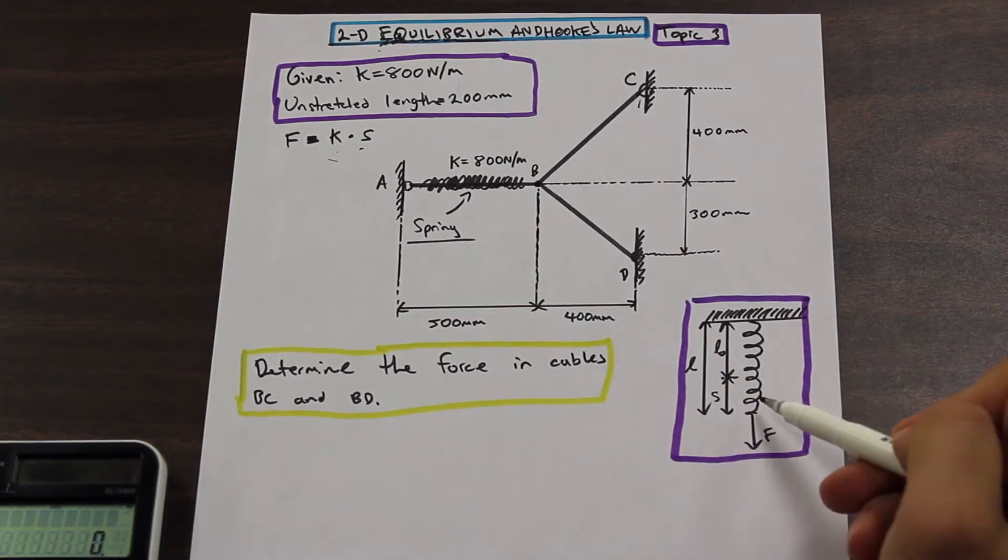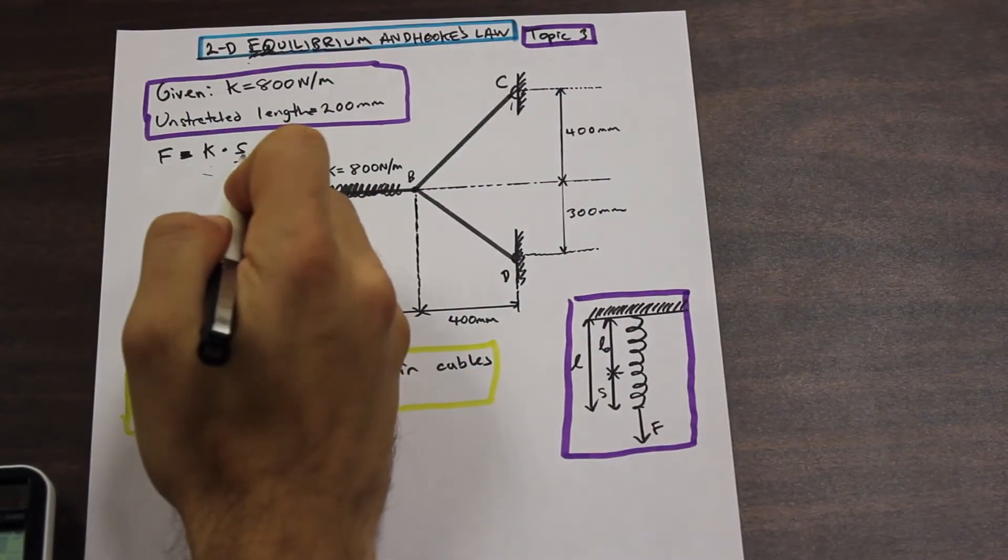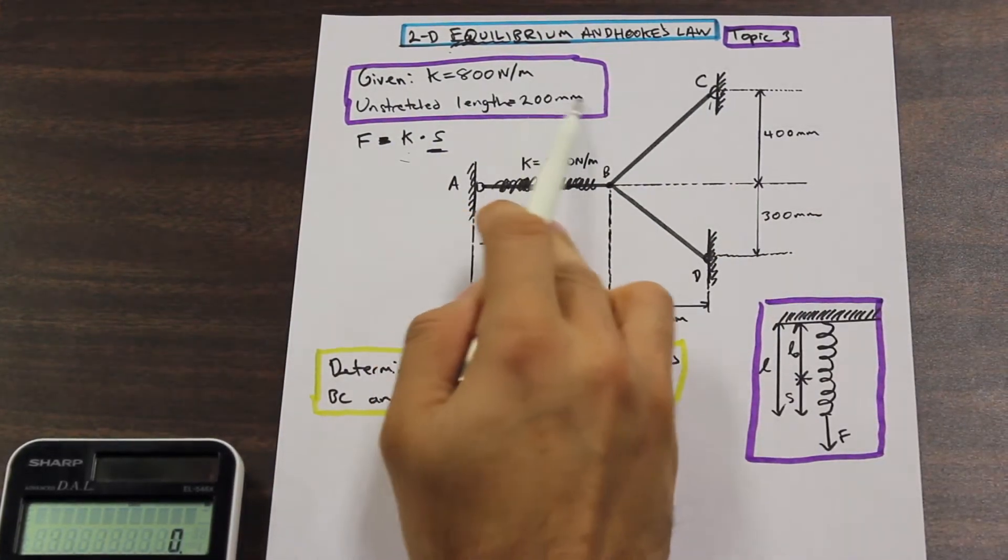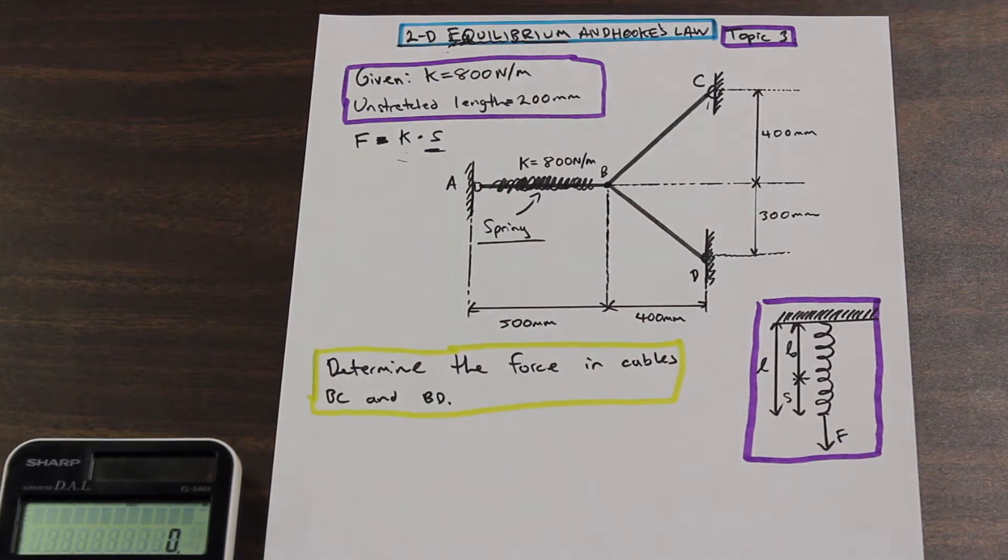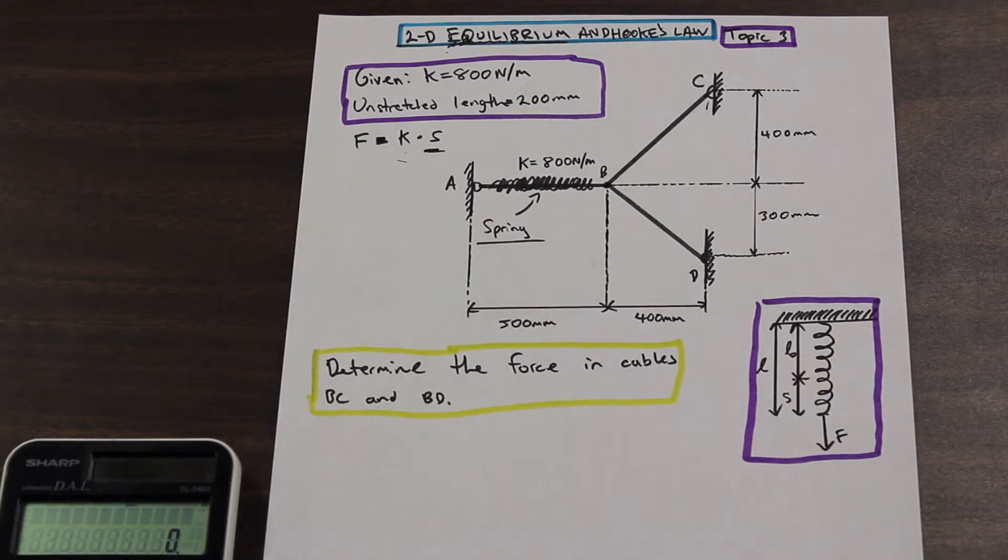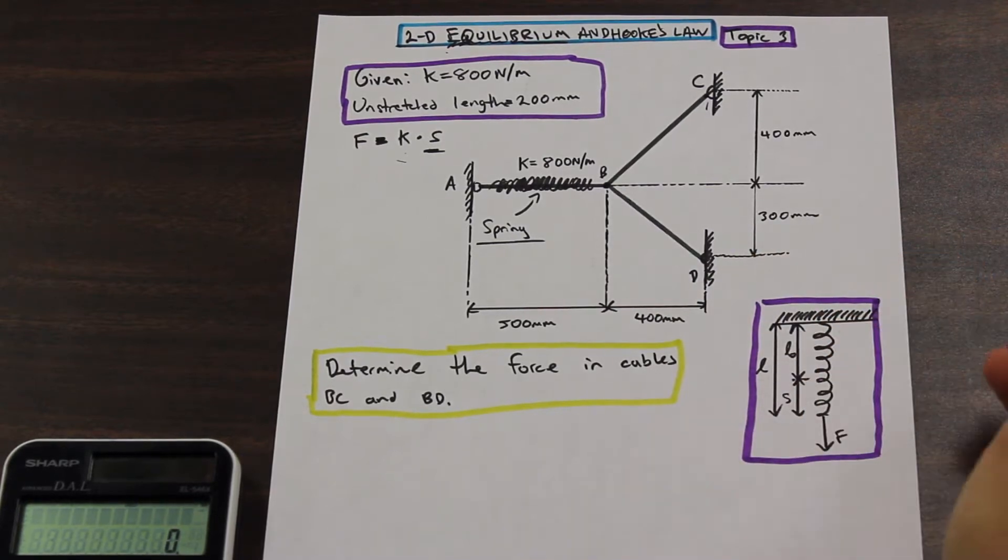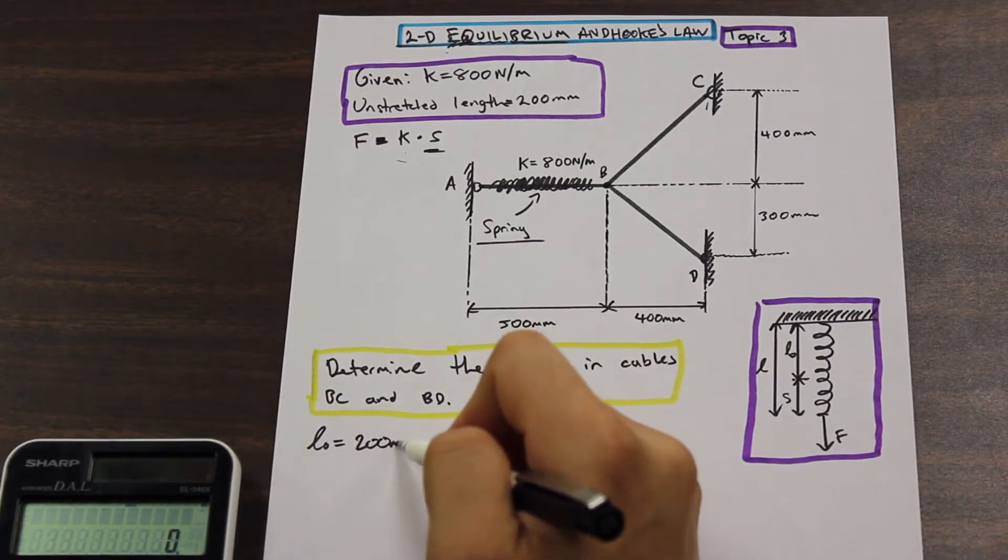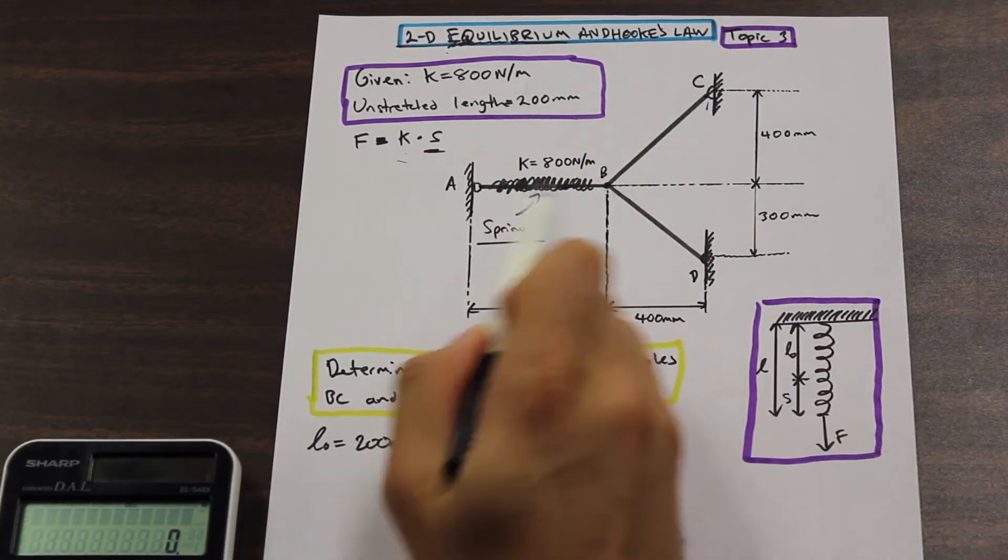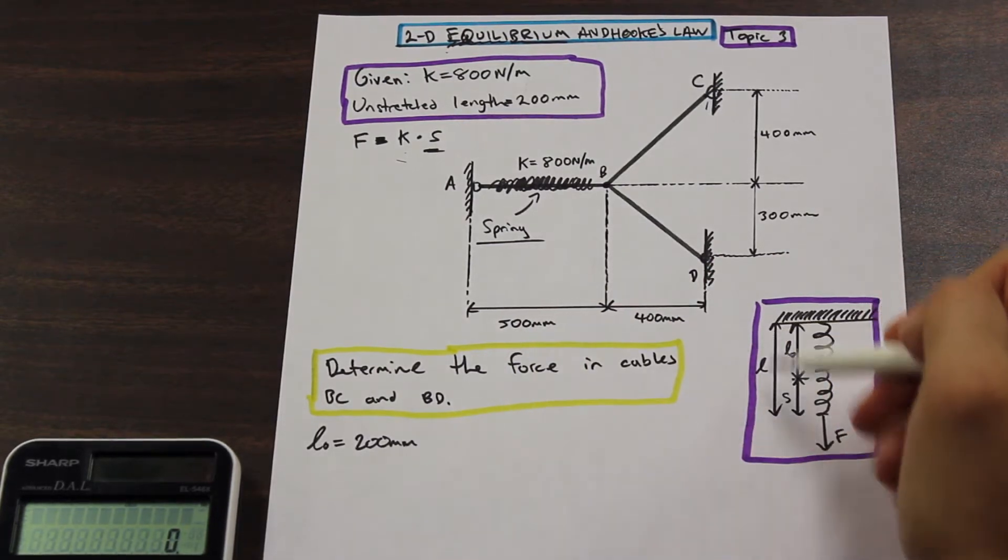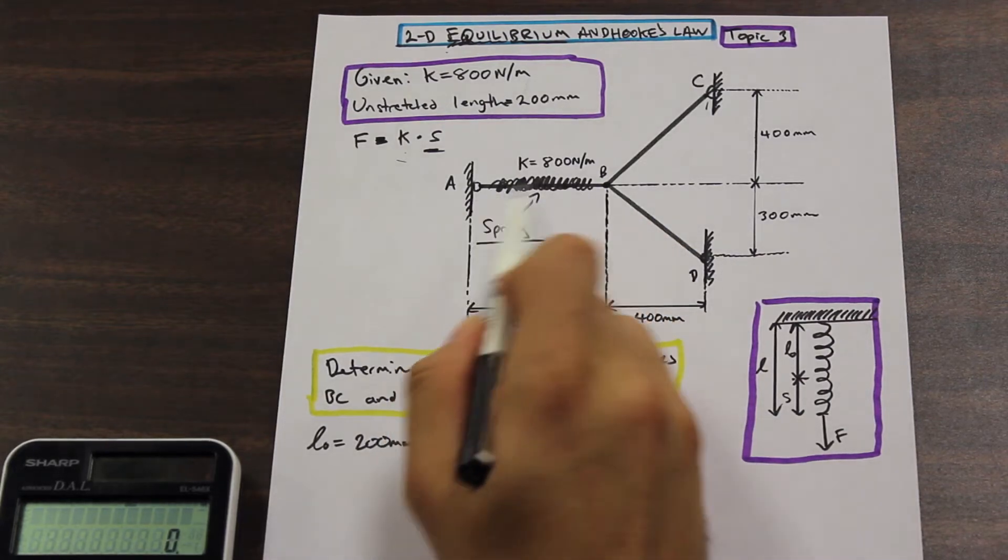All right so if we go ahead and take a look down here. A lot of the time what will happen is this variable here s won't be given. But what you might be given is the unstretched length. So if you were to just take 200 millimeters and put it in for s that would be wrong, because s is the stretched length and we need to find s here. So L naught in this case is going to be our unstretched length. So that's the initial length L naught. All right so L naught is equal to 200 millimeters. And this from A to B here we can consider that entire thing to be the spring and we're given the length of that 500 millimeters. So our L, or we're assuming this spring is stretched currently, that L is equal to 500 millimeters.